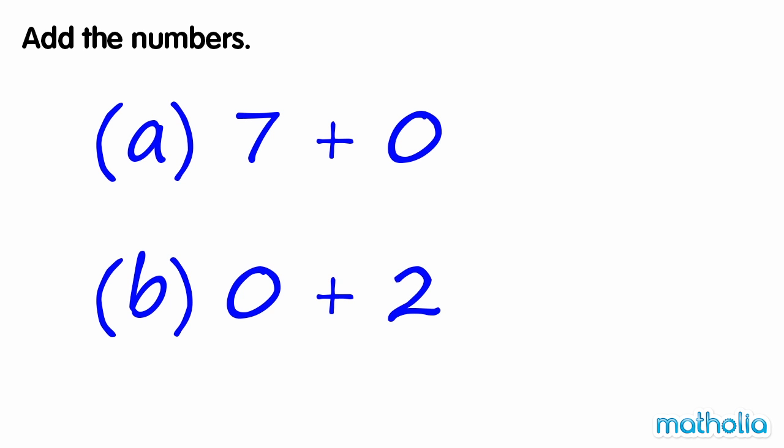Add the numbers. We have learned that adding zero to a number does not change the number. So seven plus zero equals seven.